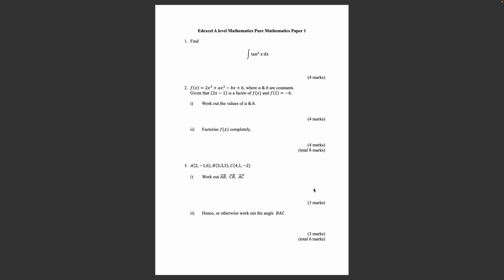Let's get on with the paper. Question 1: Find the integral of tan²x dx. Question 2: f(x) = 2x³ + ax² - bx + 6, where a and b are constants. Given that 2x - 1 is a factor of f(x) and f(1) = -6, work out the values of a and b. Factorize f(x) completely.